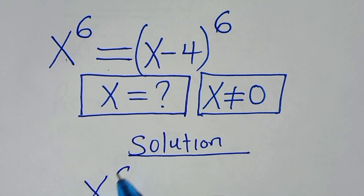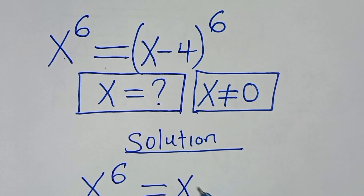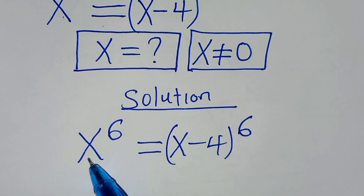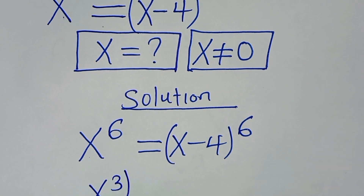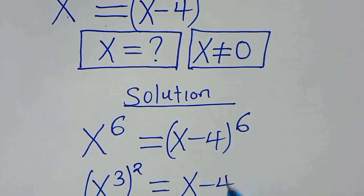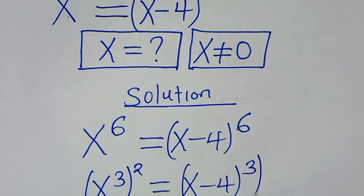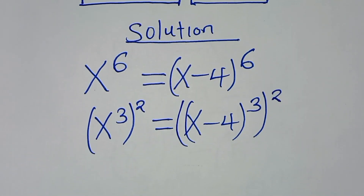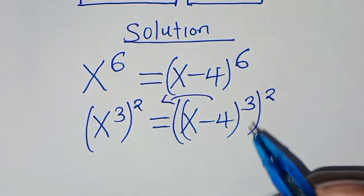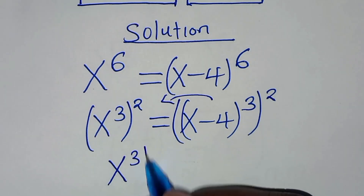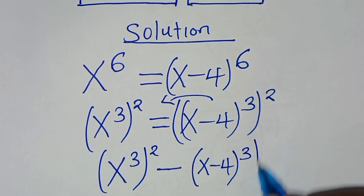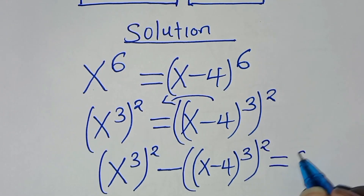We have x to the power of 6, this is equal to x minus 4 raised to the power of 6. We can express x to the power of 6 as x to the power of 3 raised to power 2, and this is equal to x minus 4 raised to the power of 3 raised to power 2. Taking the right-hand term to the left, we have x to the power of 3 squared minus x minus 4 raised to the power of 3 squared, this is equal to 0.